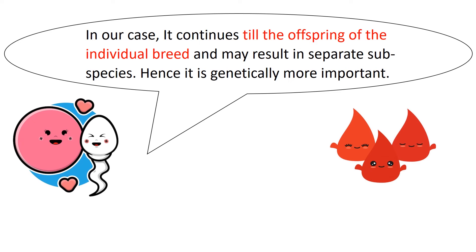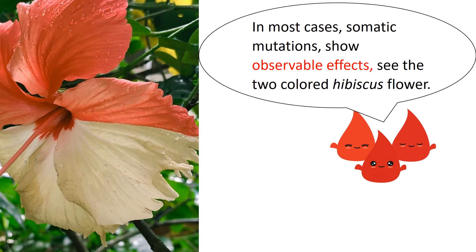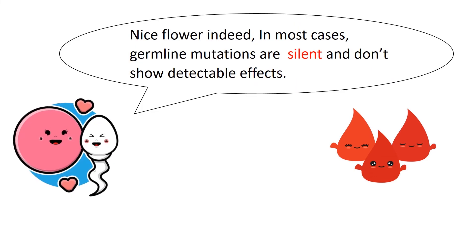Hence, germline mutation is genetically more important. In most cases, somatic mutations show observable effects — see the two-colored hibiscus flower. In most cases, germline mutations are silent and don't show detectable effects.